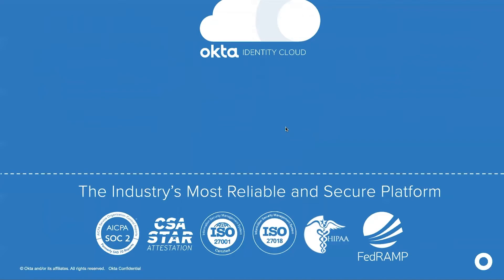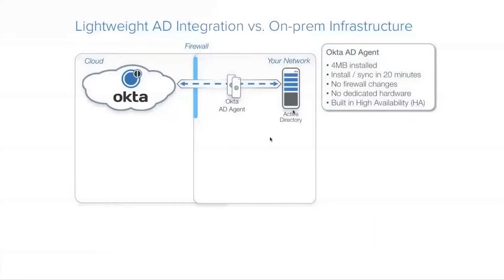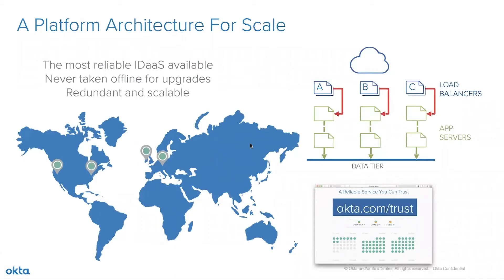You can be sure that your identity is going to be secure and always available. We integrate within your on-premise infrastructure easily with only a small agent and the already open web ports to communicate between the cloud infrastructure and your network. We never take you offline for upgrades or patches and we have a fully redundant and scalable architecture. We really pride ourselves on our uptime and post this at okta.com/trust in 15-minute blocks, and I'm proud to say we haven't been down for more than five years.